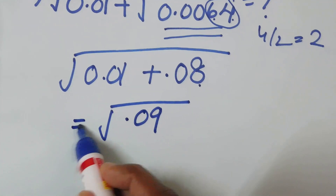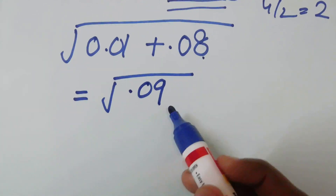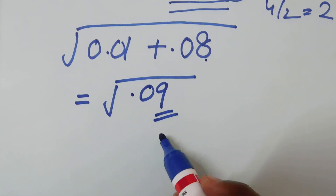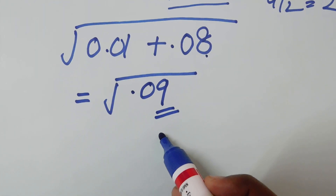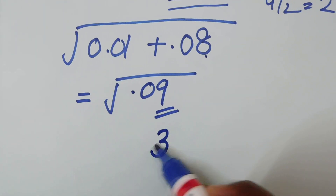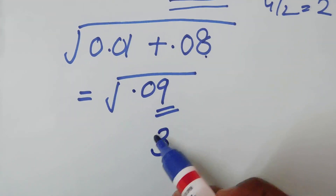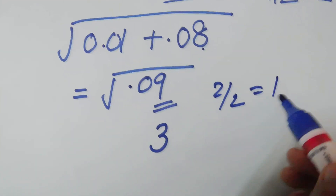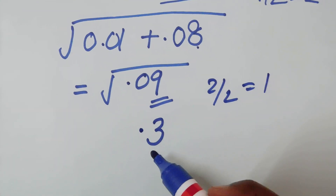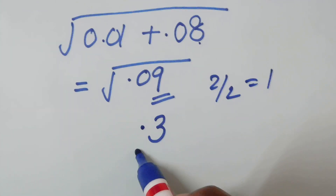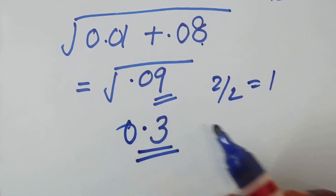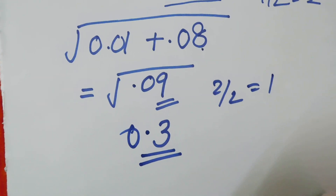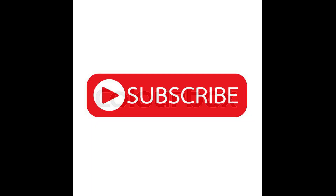You can add the values: 0.08 plus 0.01 equals 0.09. This is the square root of 9. The square root of 9 is 3. So the final answer is 0.09.